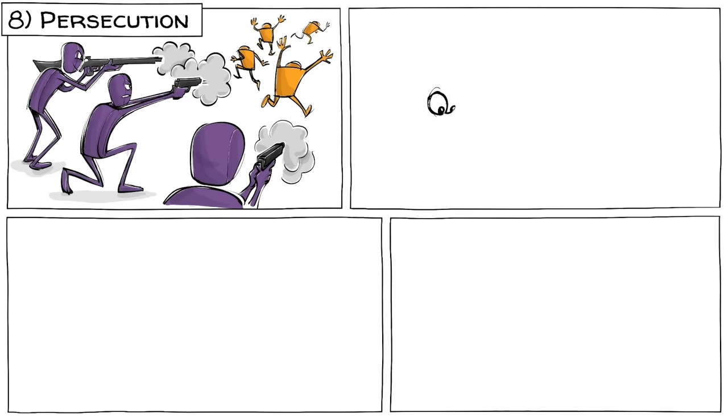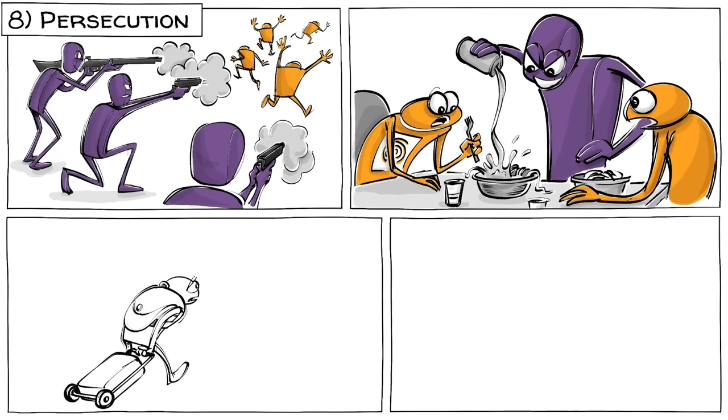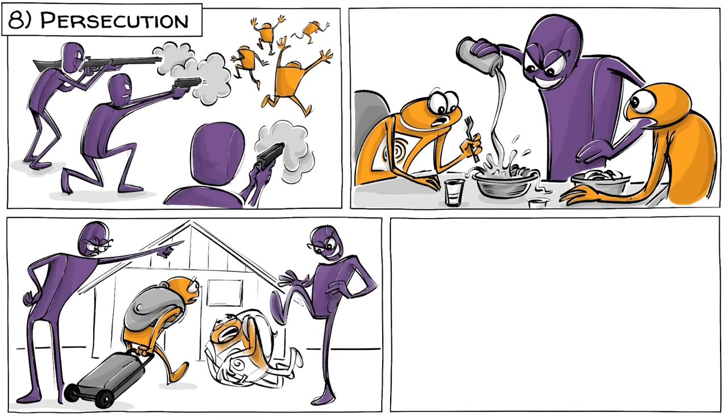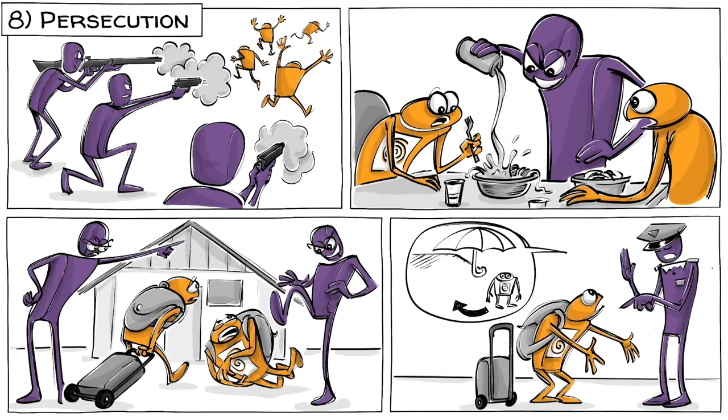Eighth is persecution. Violence escalates. The targeted group is systematically subjected to harassment, displacement or other forms of abuse. Often all of that happens under the disguise of security measures.